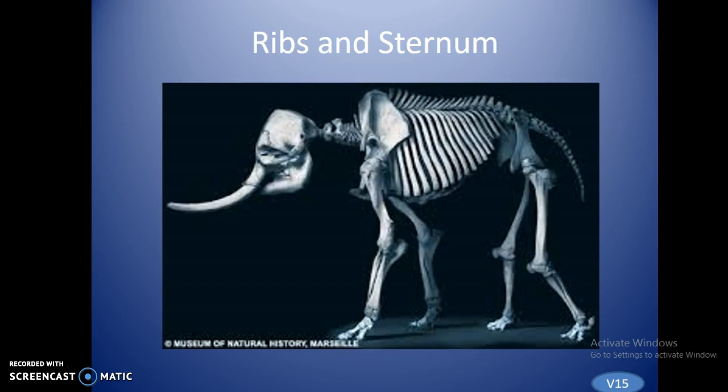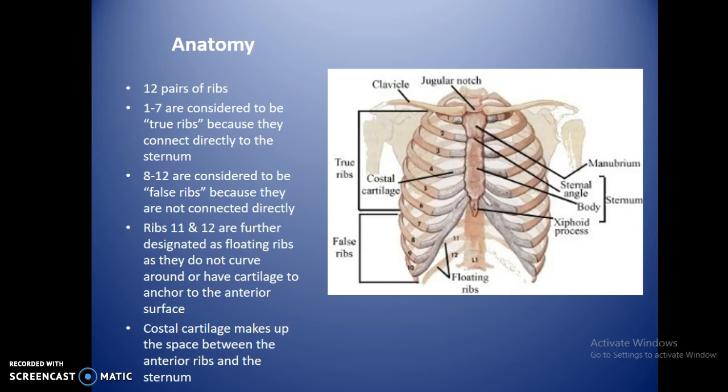There are 12 pairs of ribs. The first seven ribs, one through seven, are considered true ribs because they connect directly to the sternum via costal cartilage. Ribs eight through twelve are considered false ribs because they do not connect directly — ribs eight through ten kind of filter into one spot before piggybacking up to rib seven.